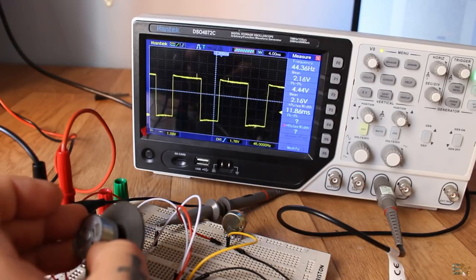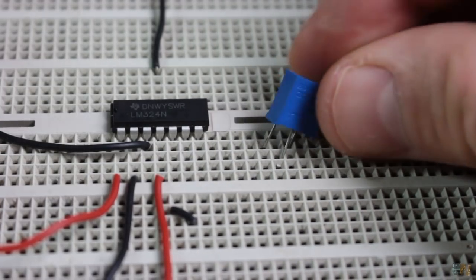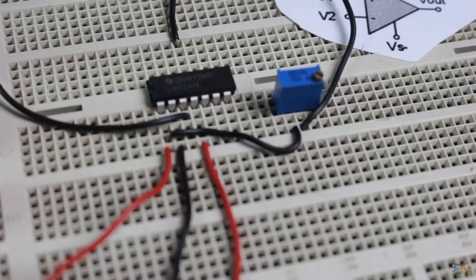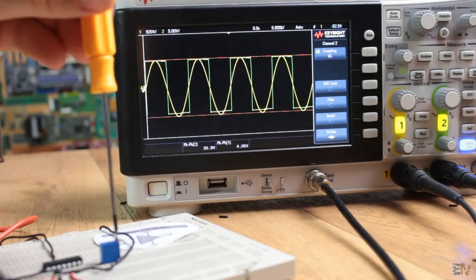Now, let's see a limitation of this op amp. At the output, I will place a potentiometer, so I could vary the output load value.